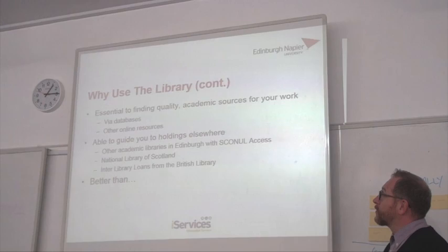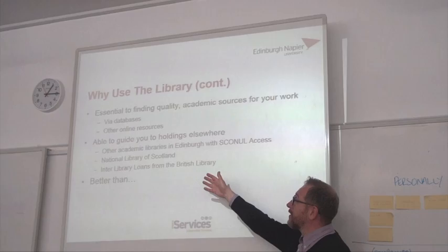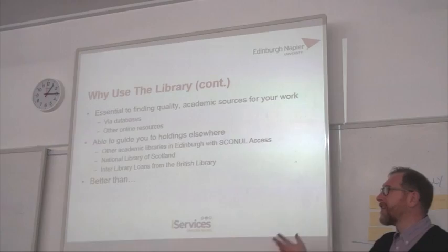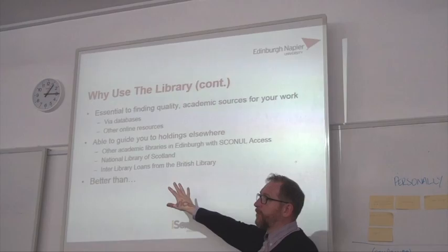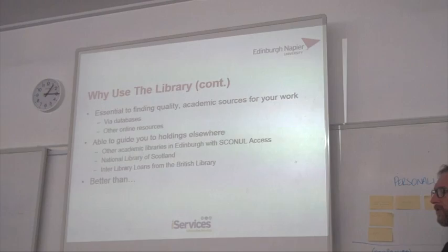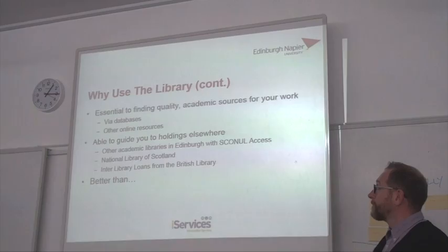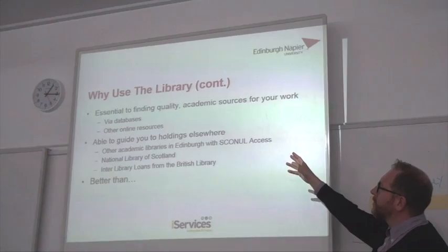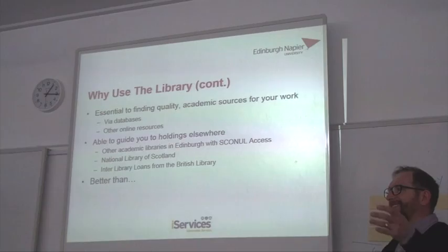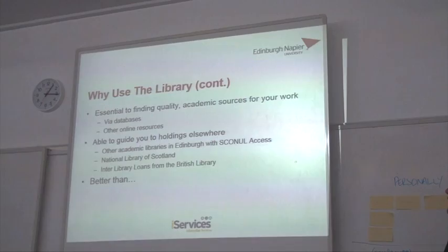If it's an article, fill out an interlibrary loan. We've got an online interlibrary loan form. You put in the details of the journal, the article, the author, the year, et cetera. We get in touch with the British Library, and if they've got it they'll send the PDF to your Napier email account. Part of my job is to know what's being taught and support it appropriately with the various resources we have — these have been purchased because they do cover your subject area.